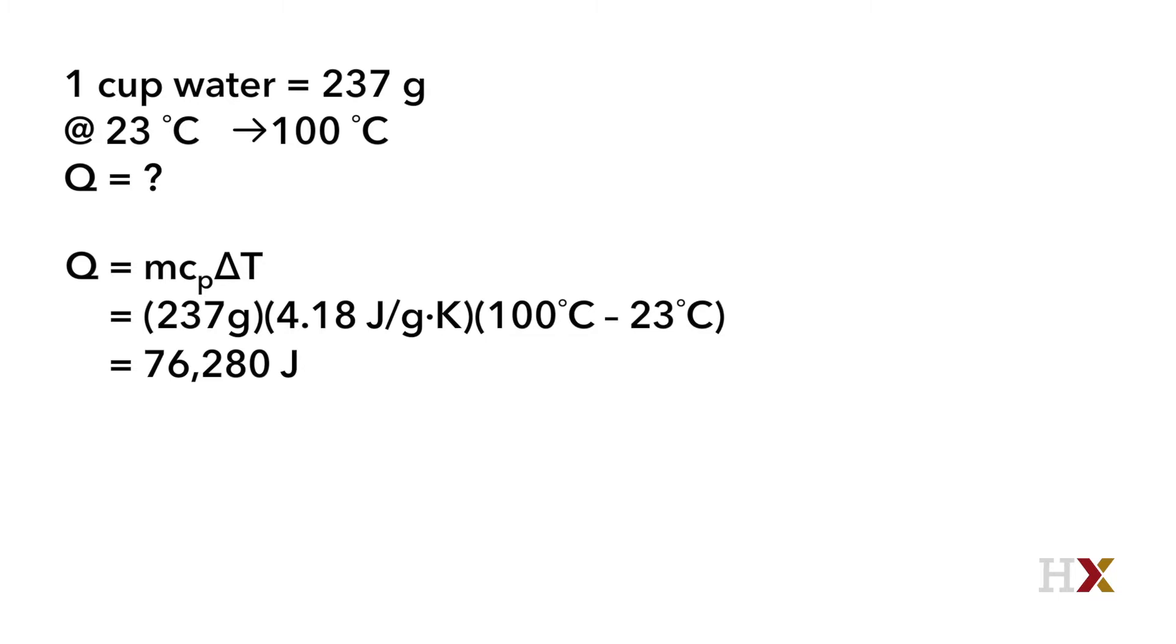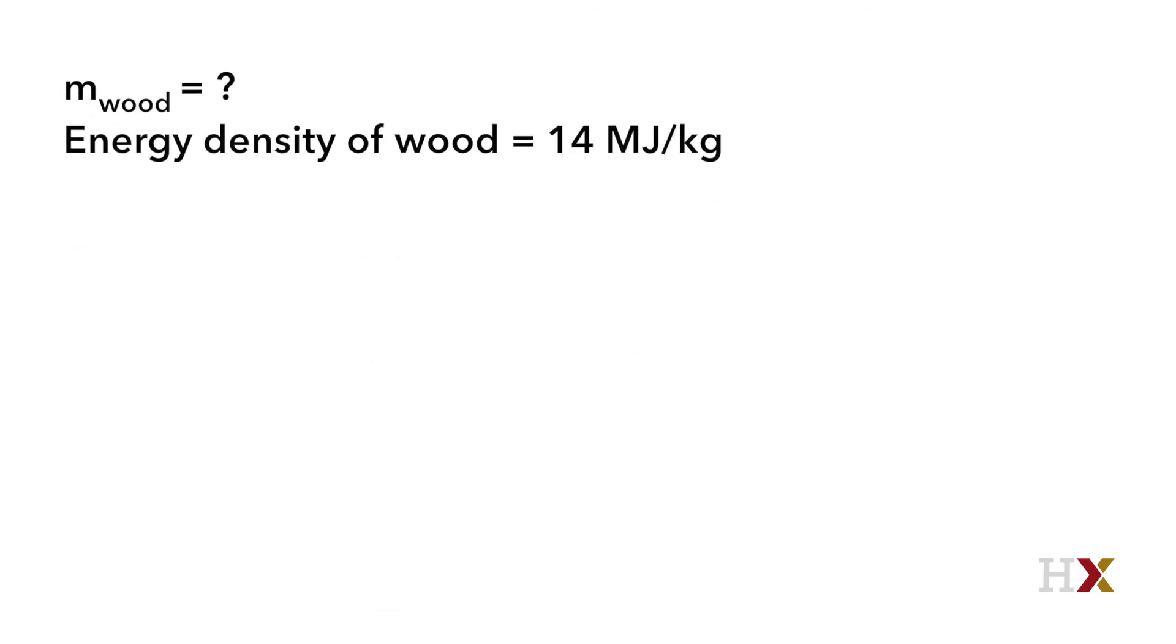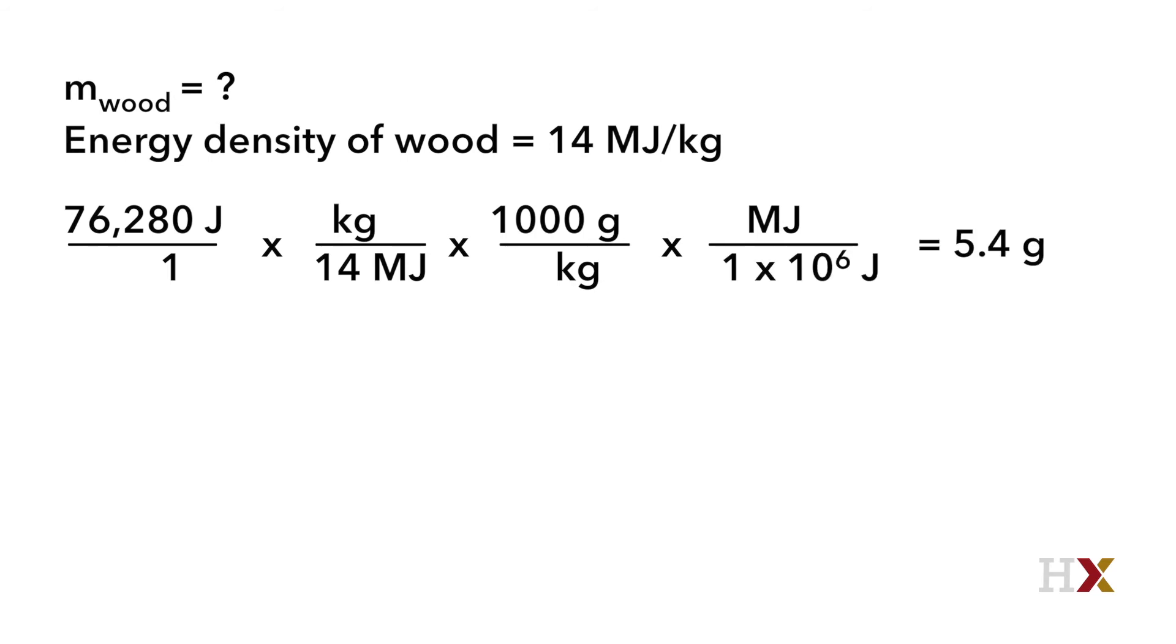Now, it's a little bit hard to know how to think about that because it's just a number in joules. So one way to think about it, how much wood would it take to make this much energy? Now, if you take the energy density of wood, which I already told you is 14 megajoules per kilogram, then you can calculate that the amount of wood that it takes is 76,280 joules divided by 14 megajoules per kilogram. We find that it takes 5.4 grams of wood in order to create this much energy.